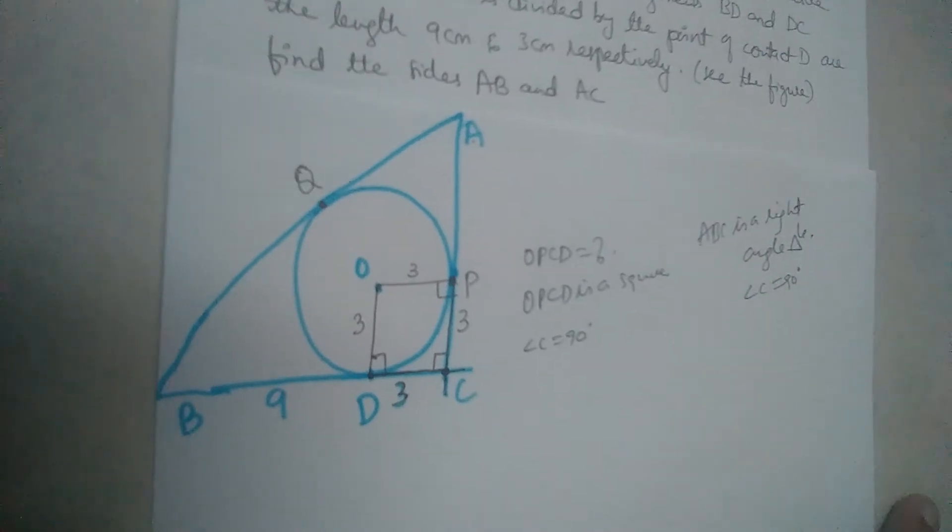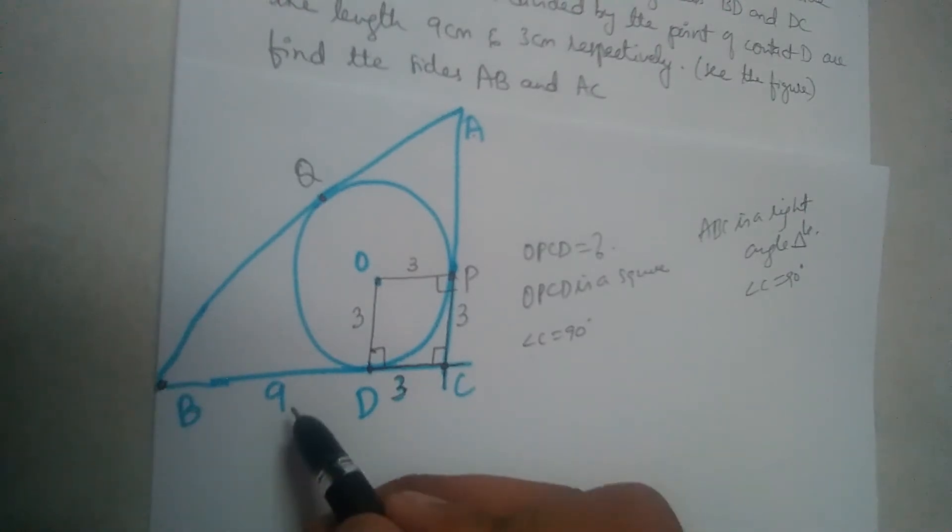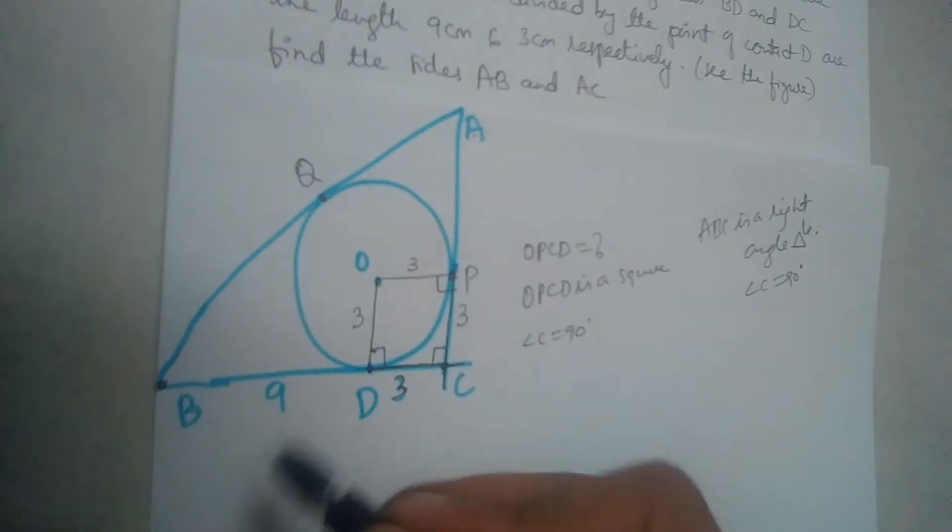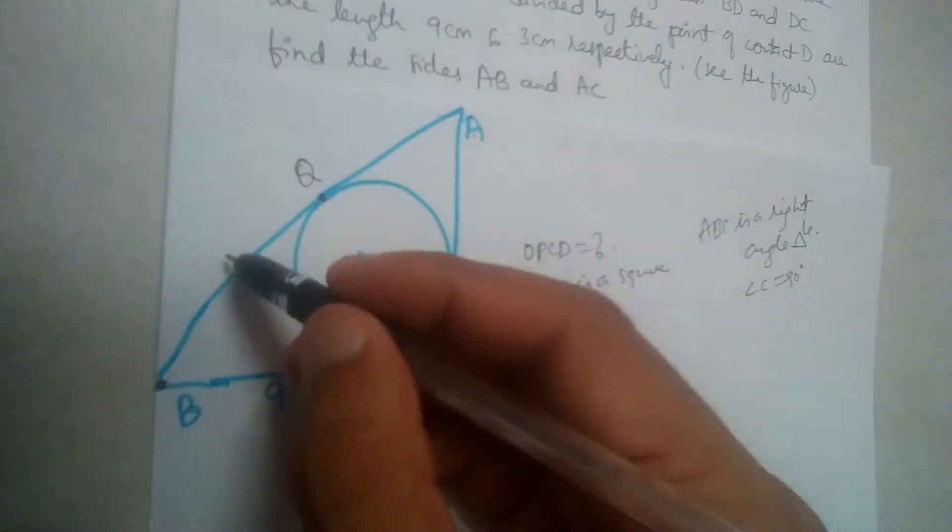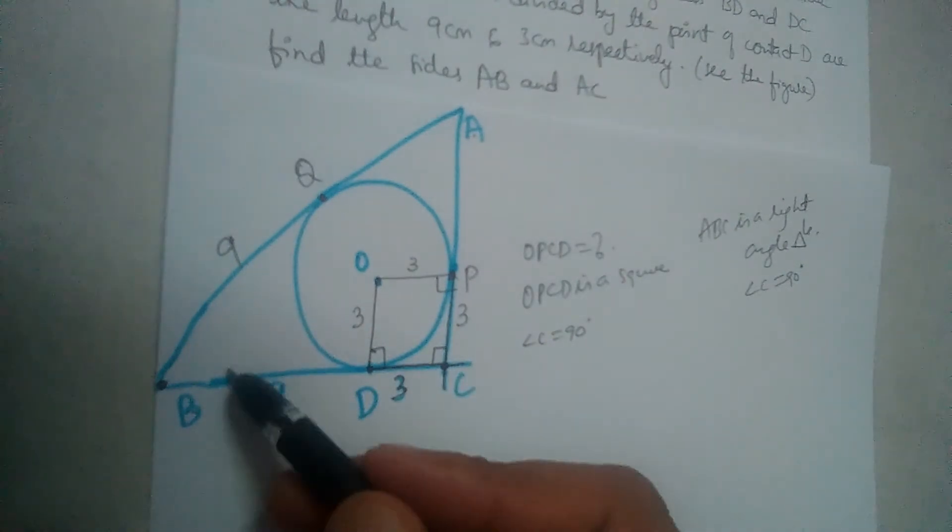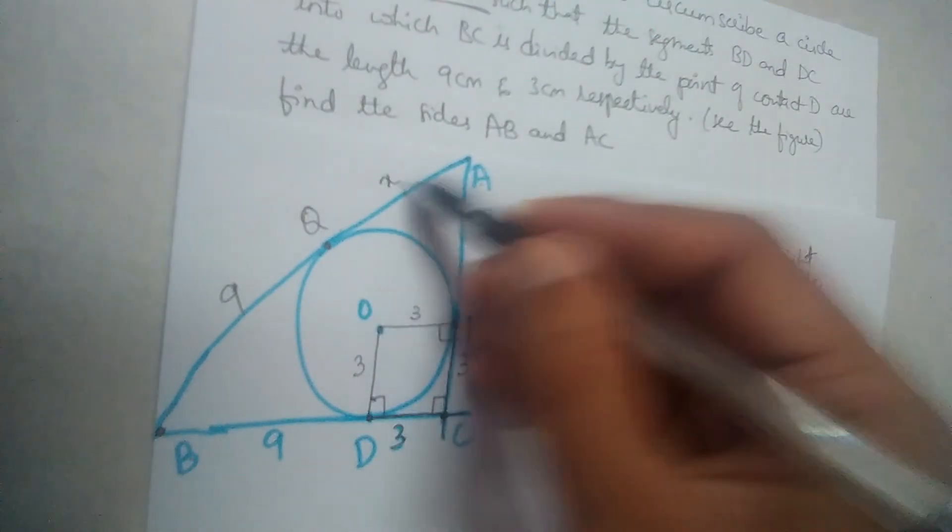Now, B is a point outside the circle. BD is the length of a tangent, so is BQ. BD equals BQ because these two lengths of tangents are equal from a point outside the circle. We don't know what AQ is - let it be X.